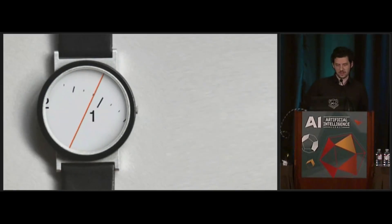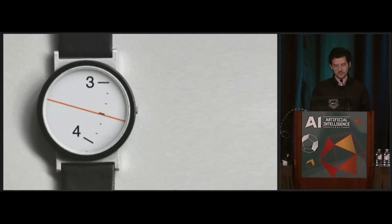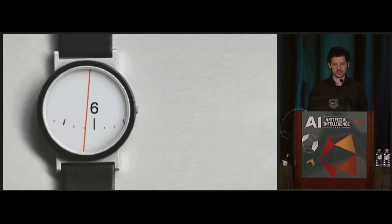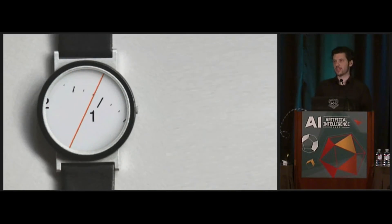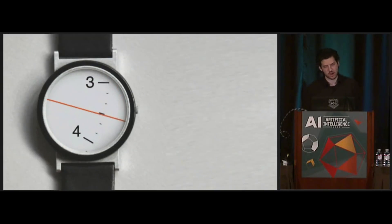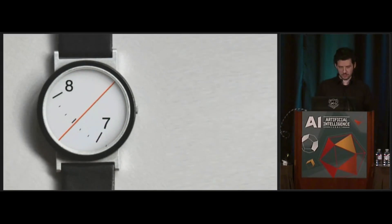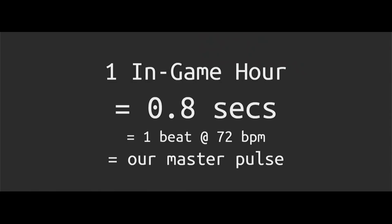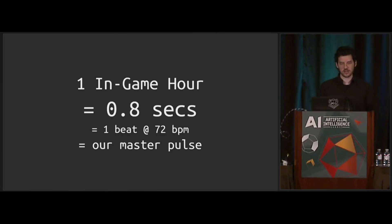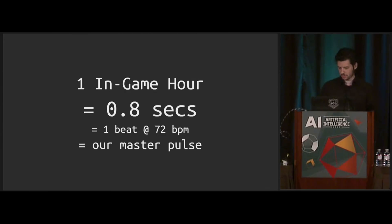You might have noticed that the game has a clock. The game is broken up into time increments that are represented as hours, days, and weeks — though, of course, faster. It's important to know that we derive the tempo of the music from the duration of one in-game hour, which is about 0.8 seconds. We use this as our standard unit of measurement for when to trigger sounds. Most of the sounds in the game are triggered periodically using fractional durations of 0.8 seconds.